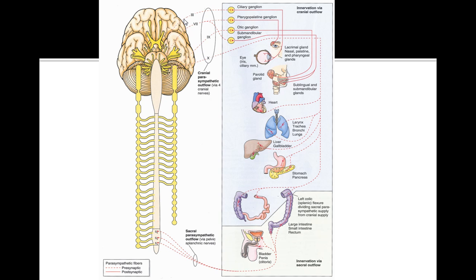In the genitourinary system, there are three major structures: the kidneys, the ureters, and the bladder. Think of it as a proximal half and a distal half. The proximal half — the kidneys and the upper ureter — is innervated by the vagus nerve. The distal half — the lower ureter and the bladder — is the pelvic splanchnic nerve. By dividing structures into proximal and distal halves, you will have no problem answering these questions on the exam.